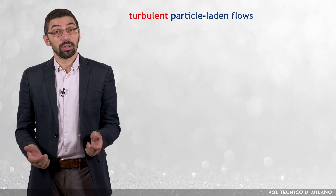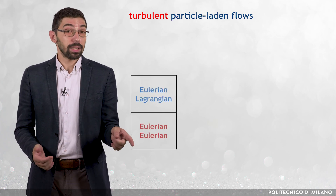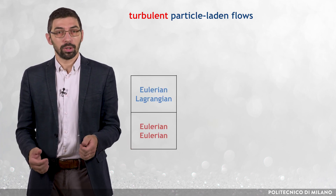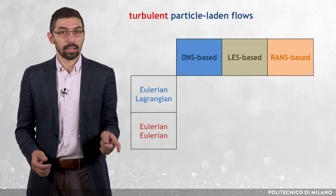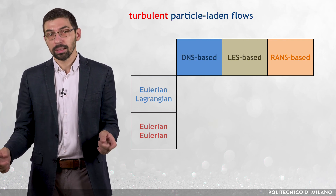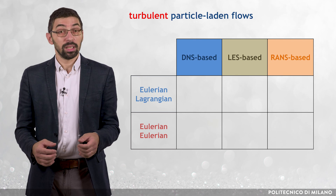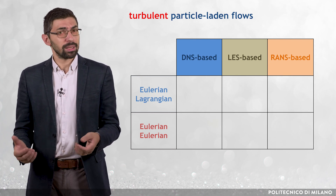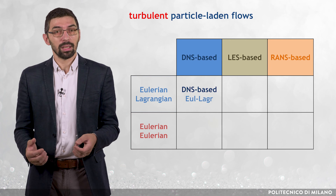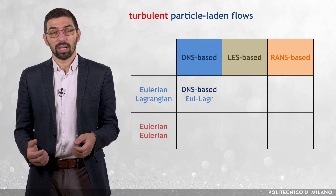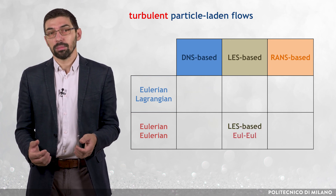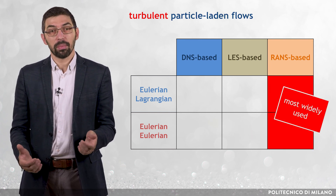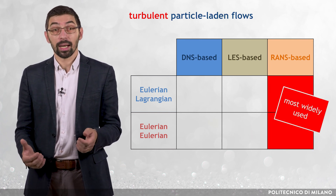The modeling of the solid phase — that is Eulerian-Lagrangian or Eulerian-Eulerian — and the modeling of turbulence — that is DNS-based, LES-based, or RANS-based — combined together, give rise to different modeling approaches. For instance, we can have DNS-based Eulerian-Lagrangian models, or LES-based Eulerian-Eulerian models. Generally, the most widely used methods in engineering are RANS-based, owing to their lower computational burden.